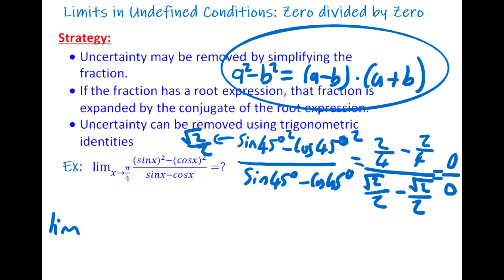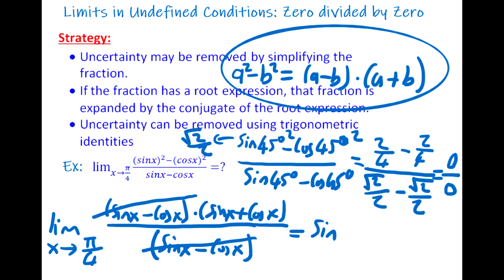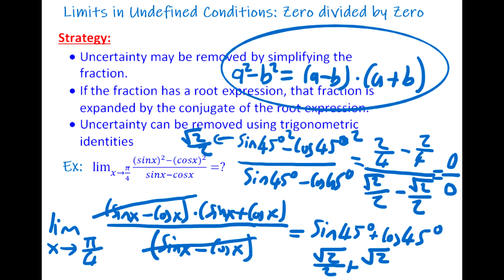We factor the numerator using a² - b² = (a - b)(a + b), writing it as (sin x - cos x)(sin x + cos x) divided by (sin x - cos x). The common factor cancels, leaving the limit of (sin x + cos x) as x goes to π/4. Substituting gives sin(45°) + cos(45°) = √2/2 + √2/2 = √2. The final answer is √2. Thank you for watching!